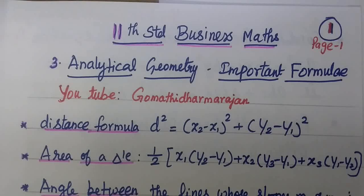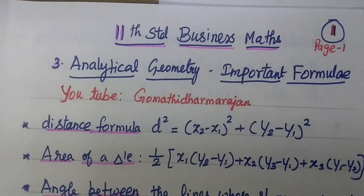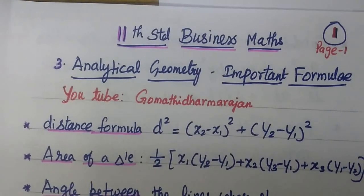You see the first one: the distance formula. d squared equal to x2 minus x1 whole square plus y2 minus y1 whole square. Remember this formula well.